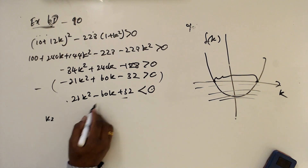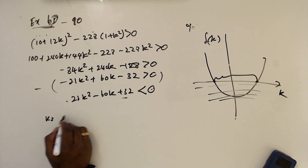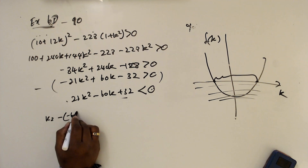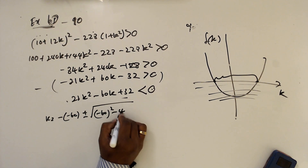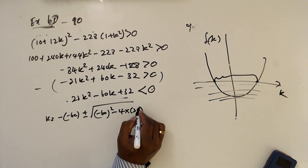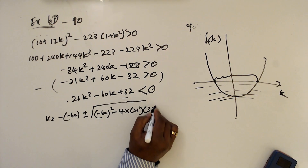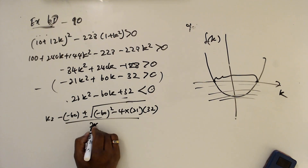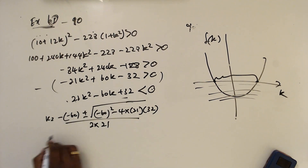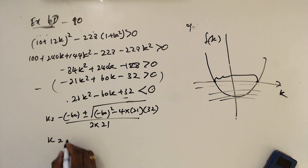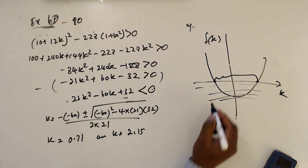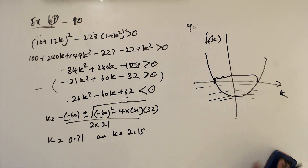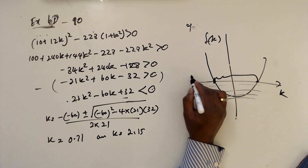Finding the roots using the quadratic formula: k = (80 ± √(80² - 4 × 21 × 32)) / (2 × 21). When you simplify, k equals approximately 0.71 and k equals approximately 2.15.